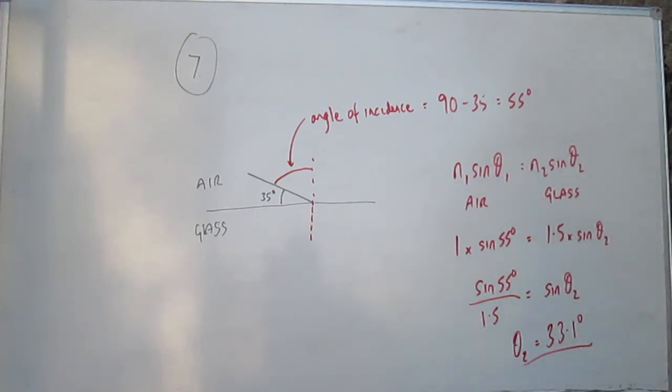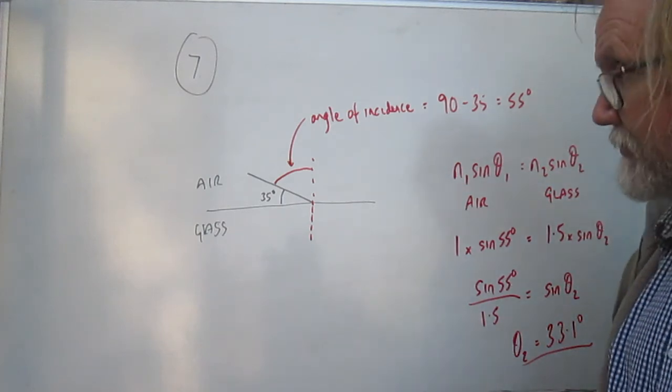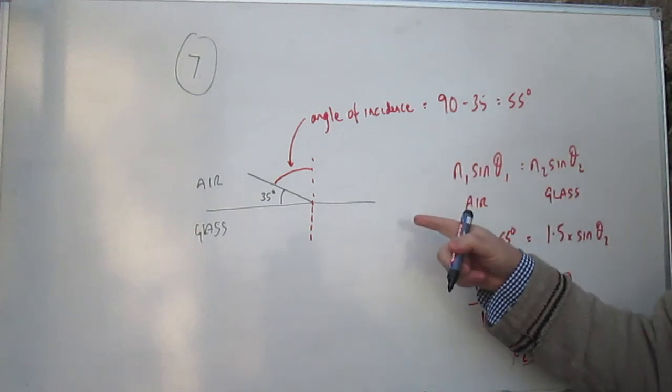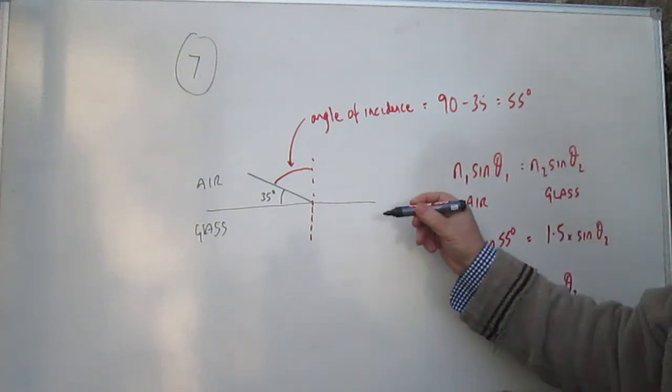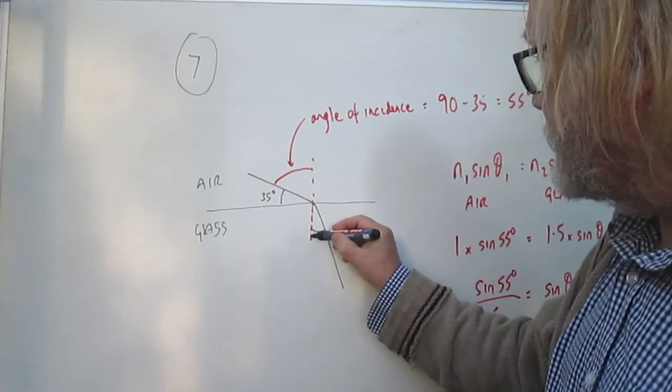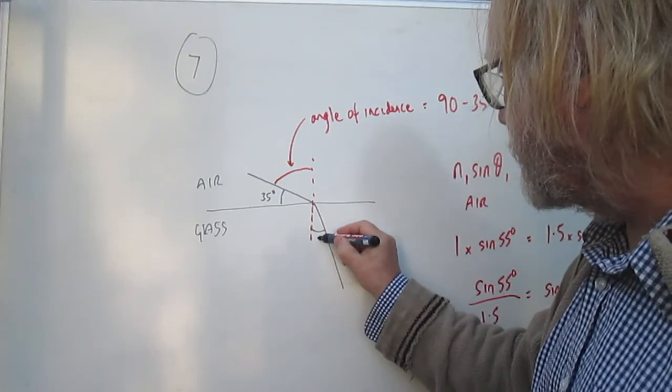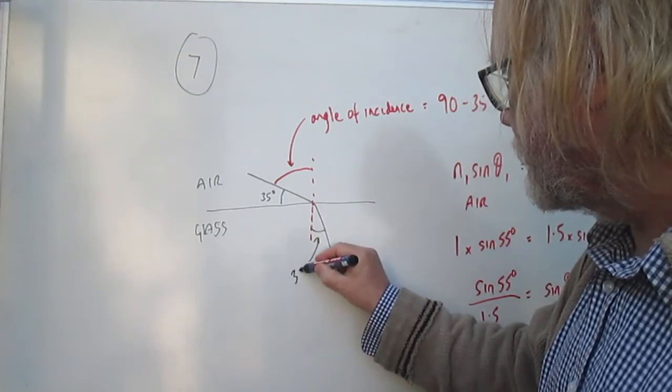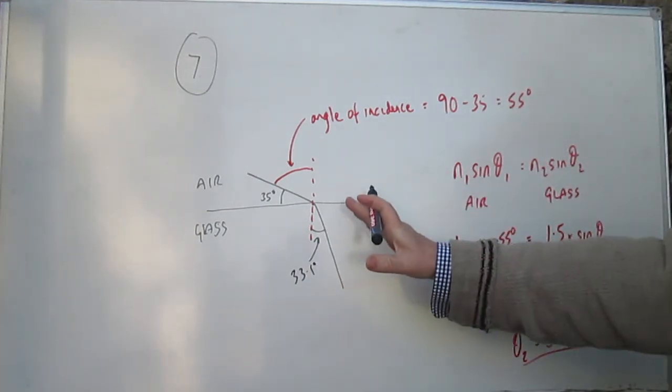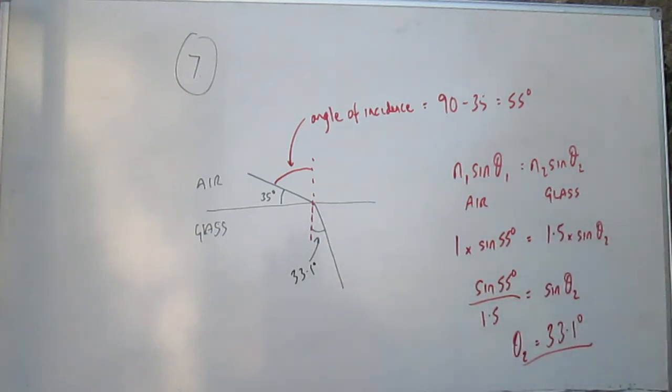And so the answer is C. And obviously, on the picture, I mean, it doesn't ask you to complete the picture, because it's a multiple choice question, but what that means is that the angle of refraction, which is this angle, is 33.1 degrees. And it's doing the normal thing. When you move into a region of higher optical density, the ray moves closer to the normal. That's the standard pattern. But C was the answer.